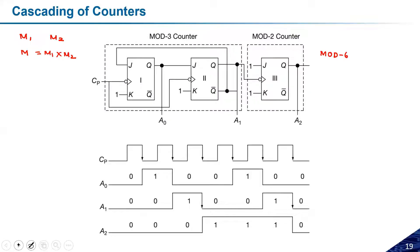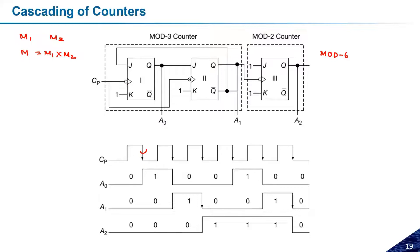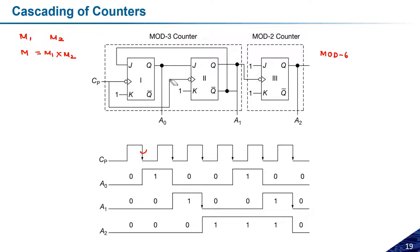Looking at the clock pulse — all the flip-flops are negative edge triggered. When the negative edge comes, A0 will change its state. The mode 3 counter here is a synchronous one, because the clock pulse for both flip-flops is controlled by the same clock. So when the negative clock pulse comes, A0 will change its state from 0 to 1.